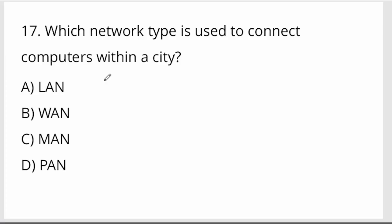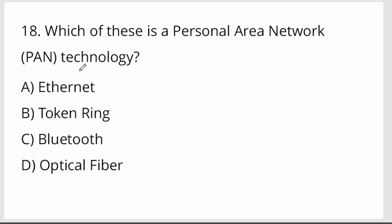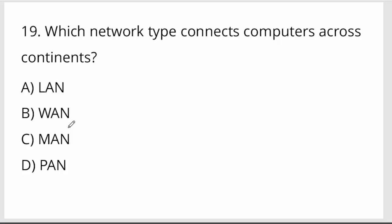Which network type is used to connect computers within a city? Metropolitan Area Network (MAN). Which is a personal area network (PAN) technology? Bluetooth. Which network type connects computers across continents? Wide Area Network (WAN) — example: the Internet.